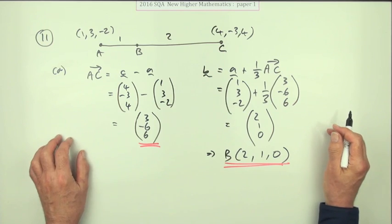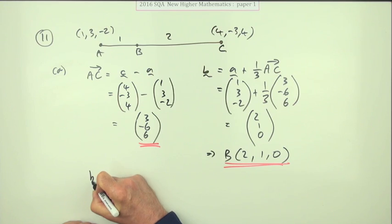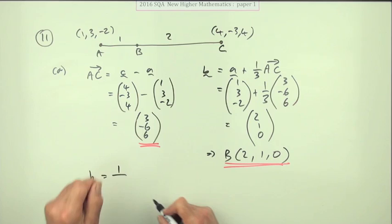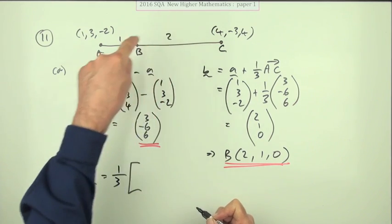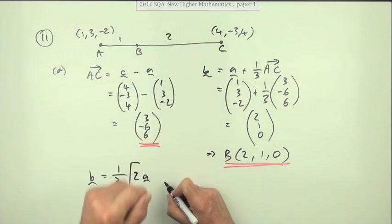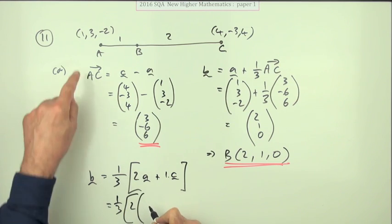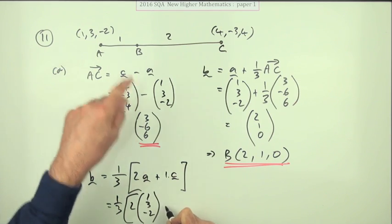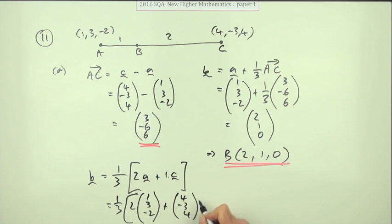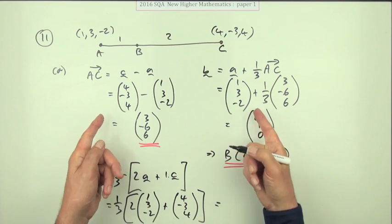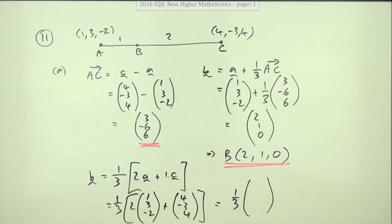There are other ways to do it. You might use the section formula. The fraction would be 1 over 3 parts total. Then you do 2 lots of A plus 1 lot of C. So you've got (1/3)[2(1, 3, -2) + (4, -3, 4)]. You could do that arithmetic: 2(1) + 4 = 6; 2(3) - 3 = 3; 2(-2) + 4 = 0. Divide by 3 gives (2, 1, 0)—exactly the same thing.